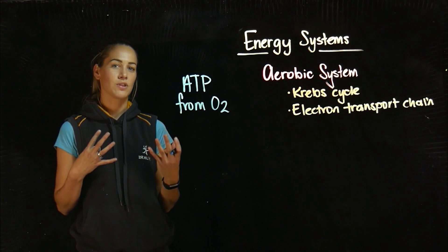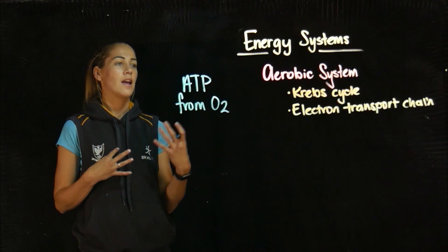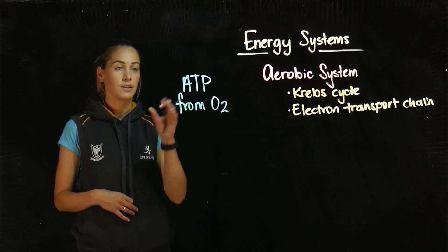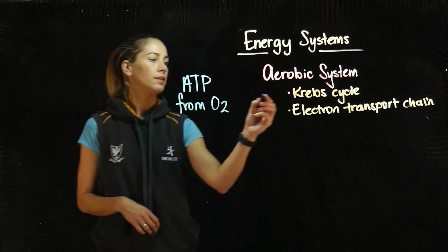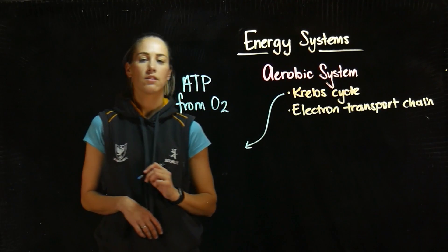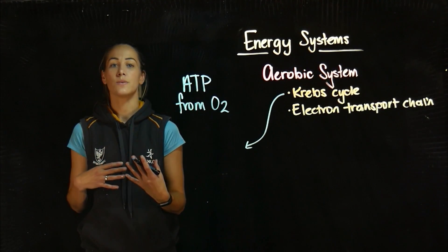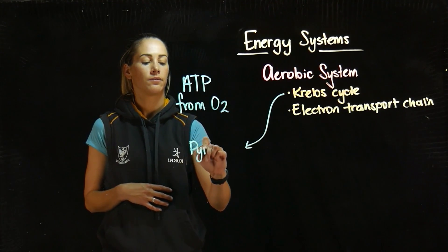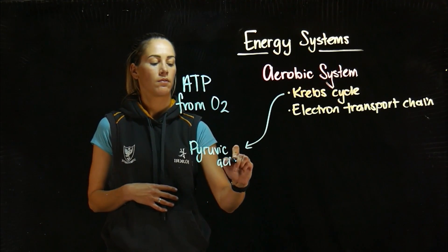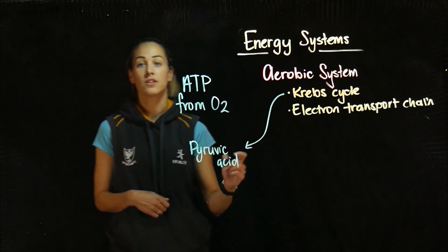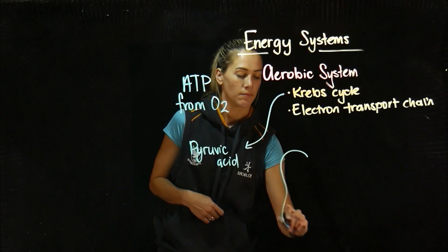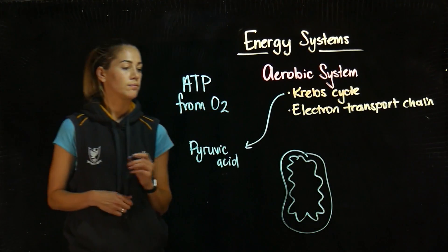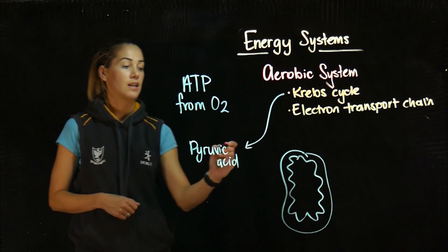I'm going to go through the two chemical reactions that take place in order to get ATP created. The Krebs cycle carries on from the glycolytic system. If you remember, pyruvic acid was a product — pyruvic acid is taken into the Krebs cycle. This occurs in the mitochondria.